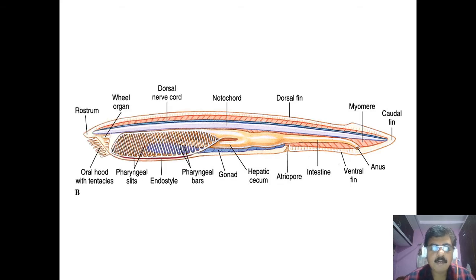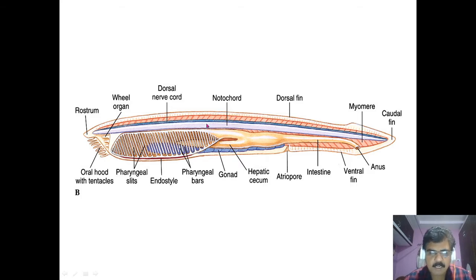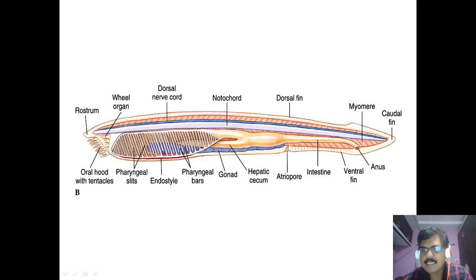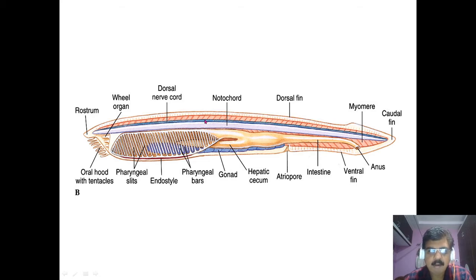Observing the Amphioxus body, it has the notochord which runs from the head region to the tail region, then just above that there is the dorsal nerve cord, and the third feature is the pharyngeal gill slits. These are the three important characteristic features, along with the muscle bands called myomeres which run throughout the length of the body.